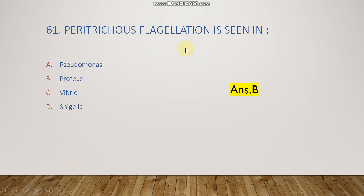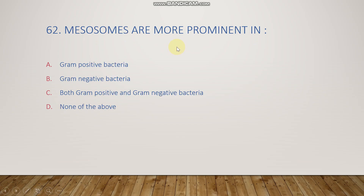The next question: mesosomes are more prominent in gram-positive bacteria, gram-negative bacteria, both gram-positive and gram-negative bacteria, or none of the above? The right answer is option A, gram-positive bacteria.